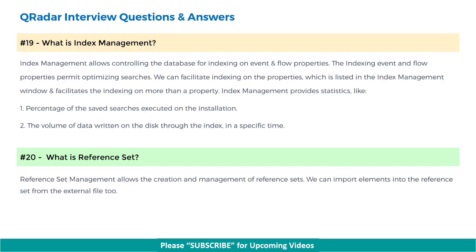Next, what is index management? Index management allows controlling the database indexing on event and flow properties. Indexing event and flow properties permits optimizing searches. We can facilitate indexing on the properties listed in the index management window and can enable indexing on more than one property. Index management provides statistics such as the percentage of saved searches executed on the installation, and the volume of data written to disk through the index in a specific time.